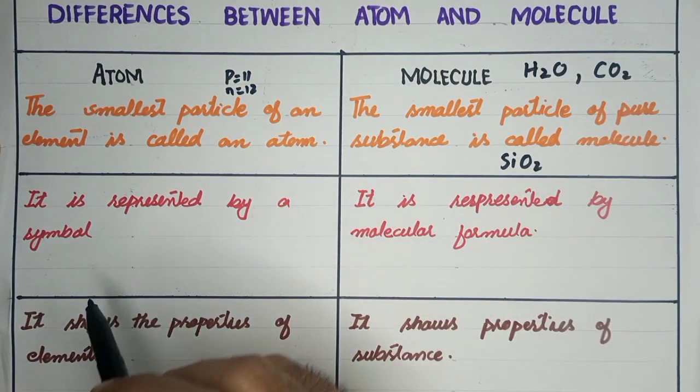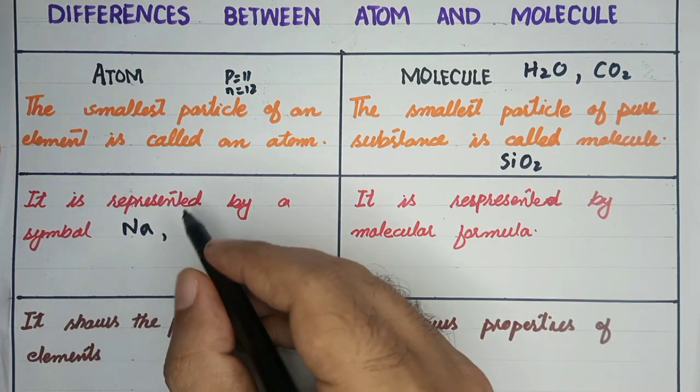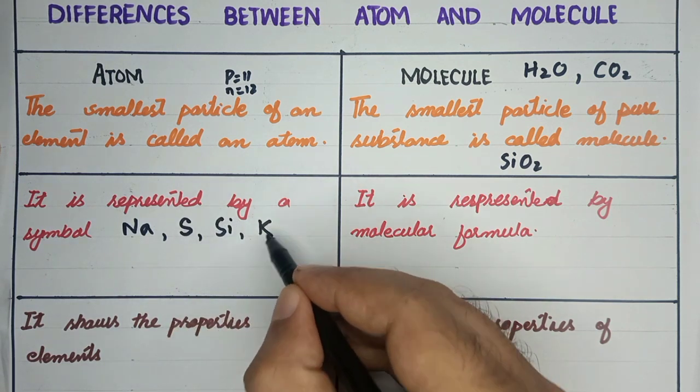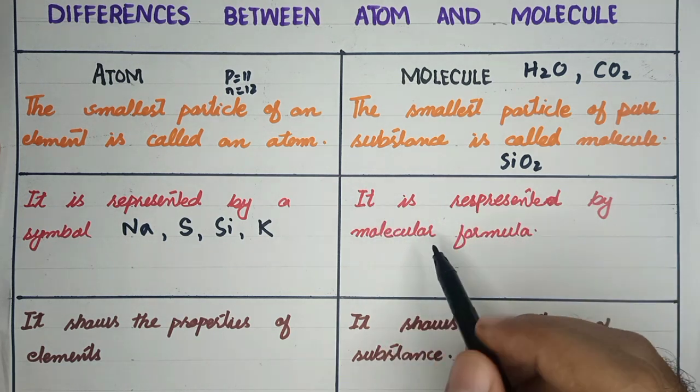Let's represent the atom. We will represent sodium as Na, sulfur as S, silicon as Si, potassium as K.